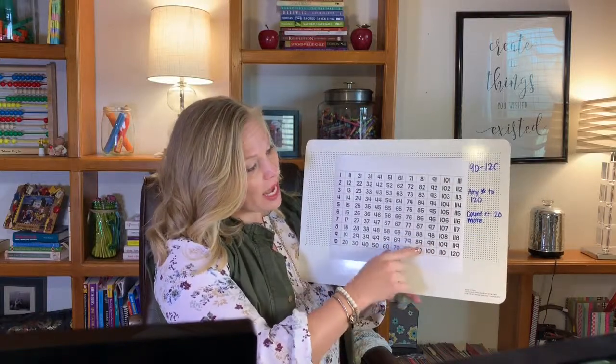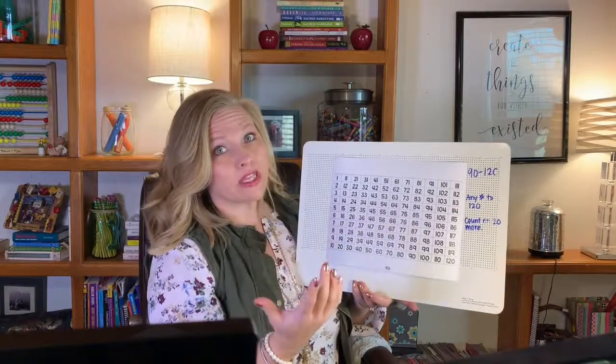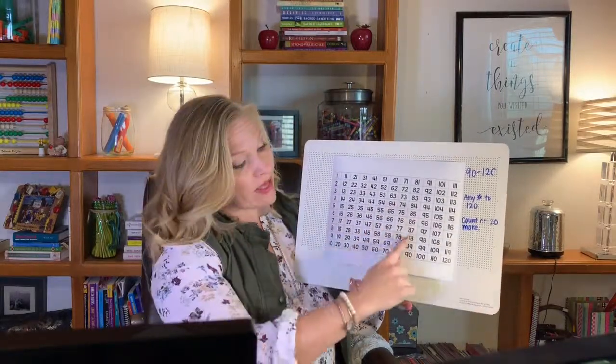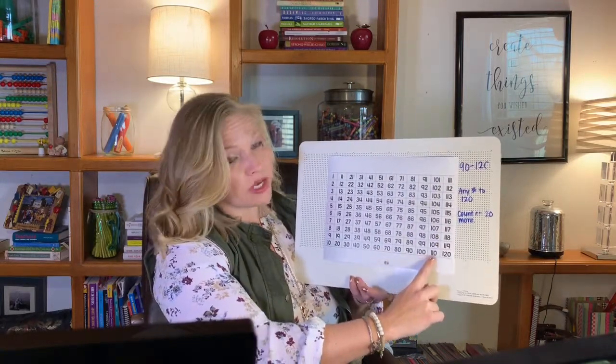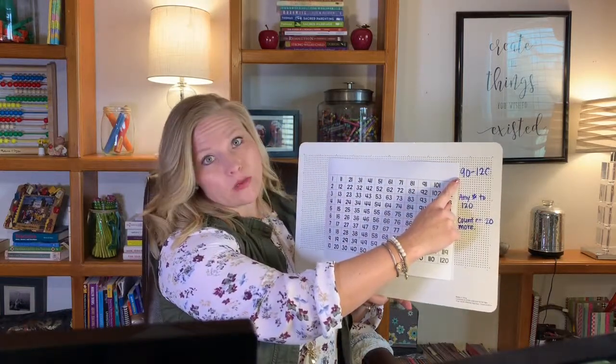So we're going to start with 90, 91, 92, and just class count with me. We're going to still encourage them to use their fingers for the ones and then to clap or to do a finger flash or something of that nature every time we get to the decade number. So first thing you're going to do is have them count from 90 to 120.